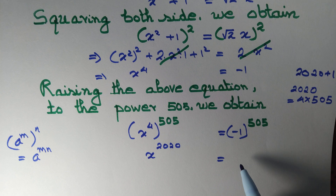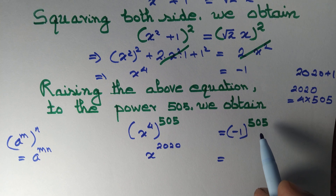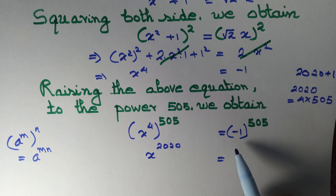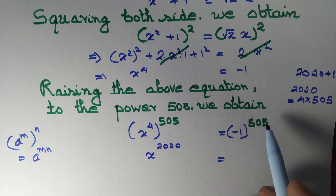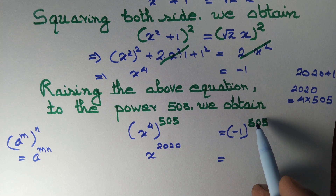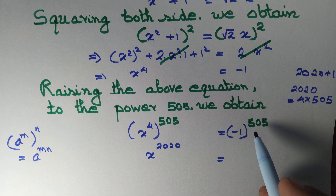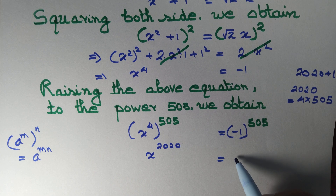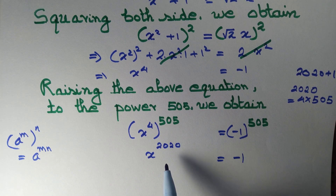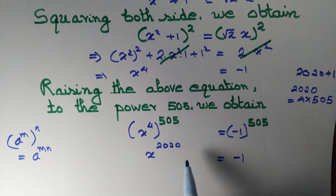Minus 1 squared is plus 1, minus 1 cubed is minus 1, minus 1 to the power 4 is plus 1. You can see that if the power is even this quantity is 1, and if the power is odd this quantity is minus 1. So x to the power 2020 equals minus 1.